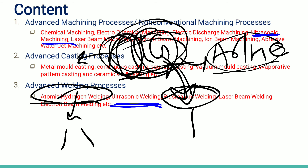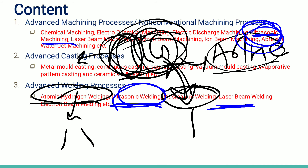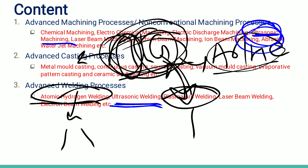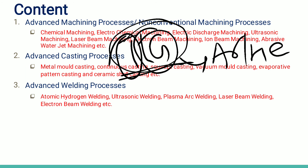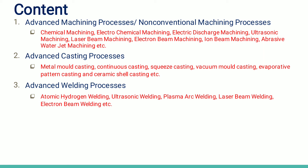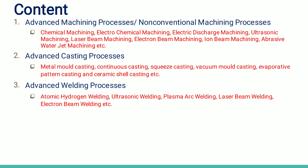In ultrasonic machining we used vibrations to remove material; in ultrasonic welding we use vibrations to join material. Similarly, laser beam and electron beam techniques were used for material removal in machining, but here they are used to join material. High energy can be utilized in different ways — for machining wherever removal is required, and for welding wherever joining is required.